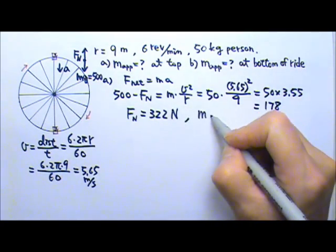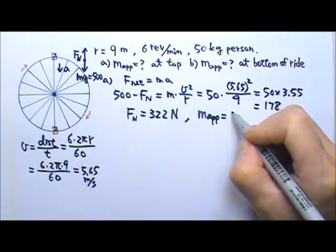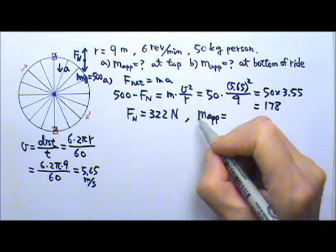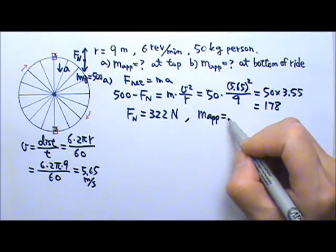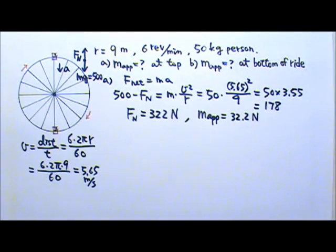So what do you think the apparent mass is? The apparent mass will be, the mg equals to the apparent weight, so the m is 32.2 kilograms. So that's part A.